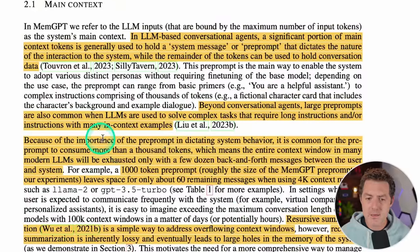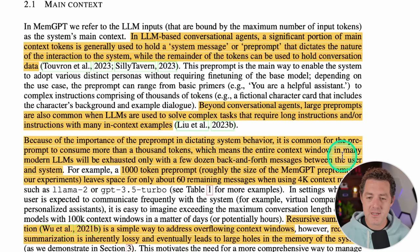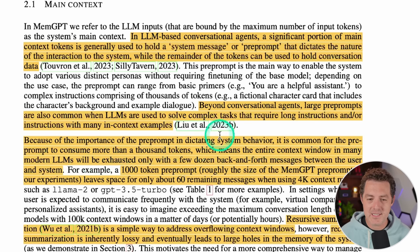Because of the importance of the pre-prompt in dictating system behavior, it's common for the pre-prompt to consume more than 1,000 tokens, which means the entire context window in many modern LLMs will be exhausted with only a few dozen back-and-forth messages between the user and system.